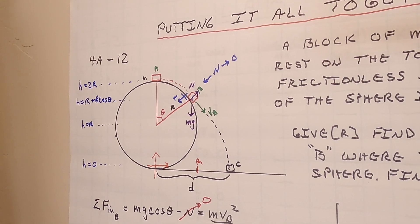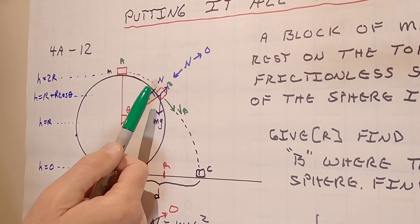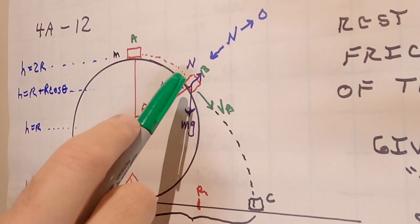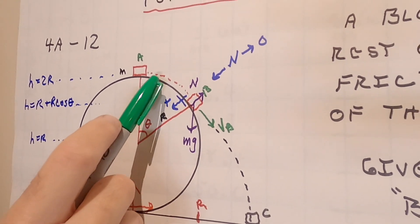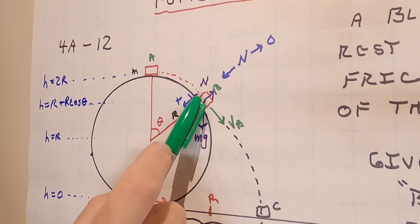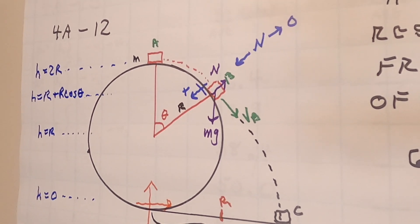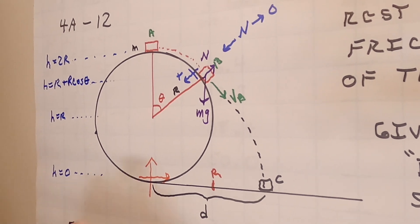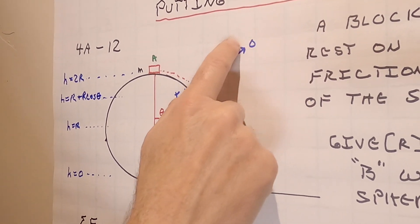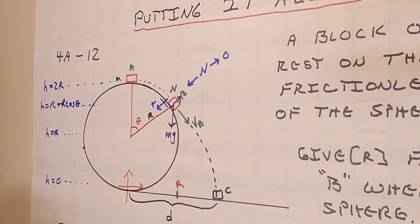If you're going to leave the surface, the normal force goes to zero. As the skater moves faster and faster, the normal force gets smaller and smaller and eventually goes to zero at that point. Since we're given information about the normal force, I'm going to use forces at the point where the normal goes to zero.